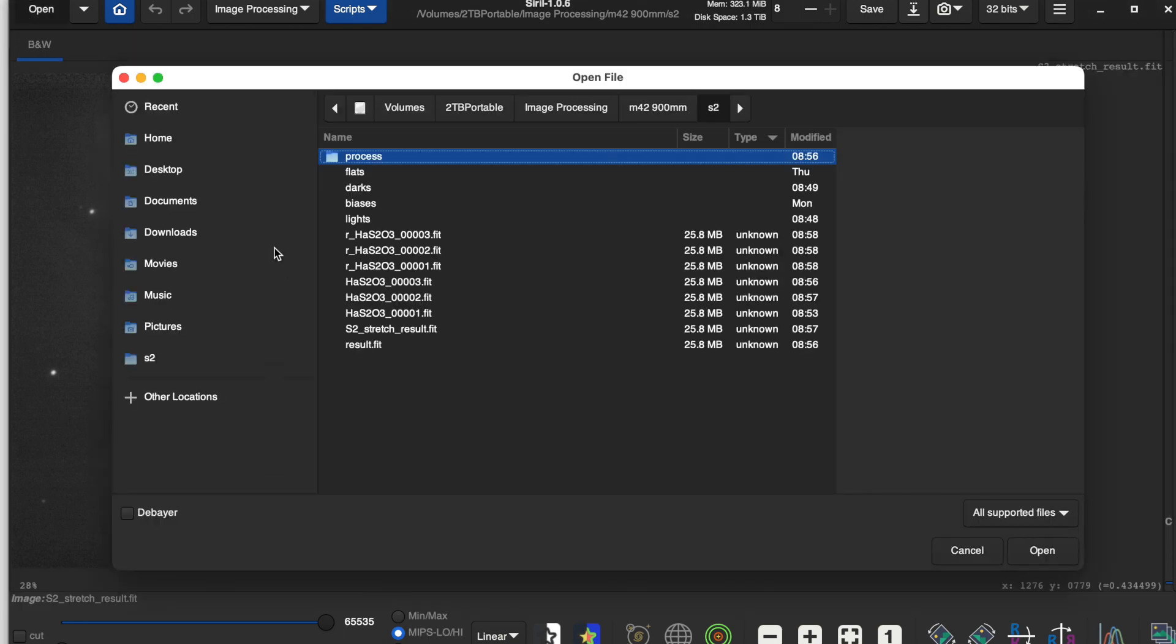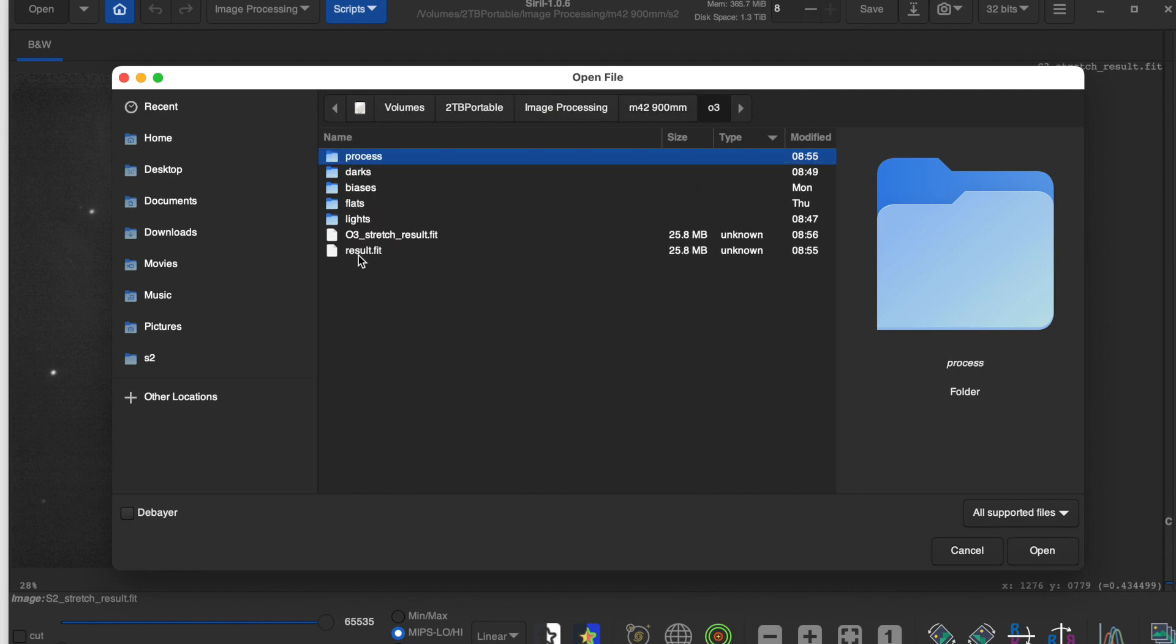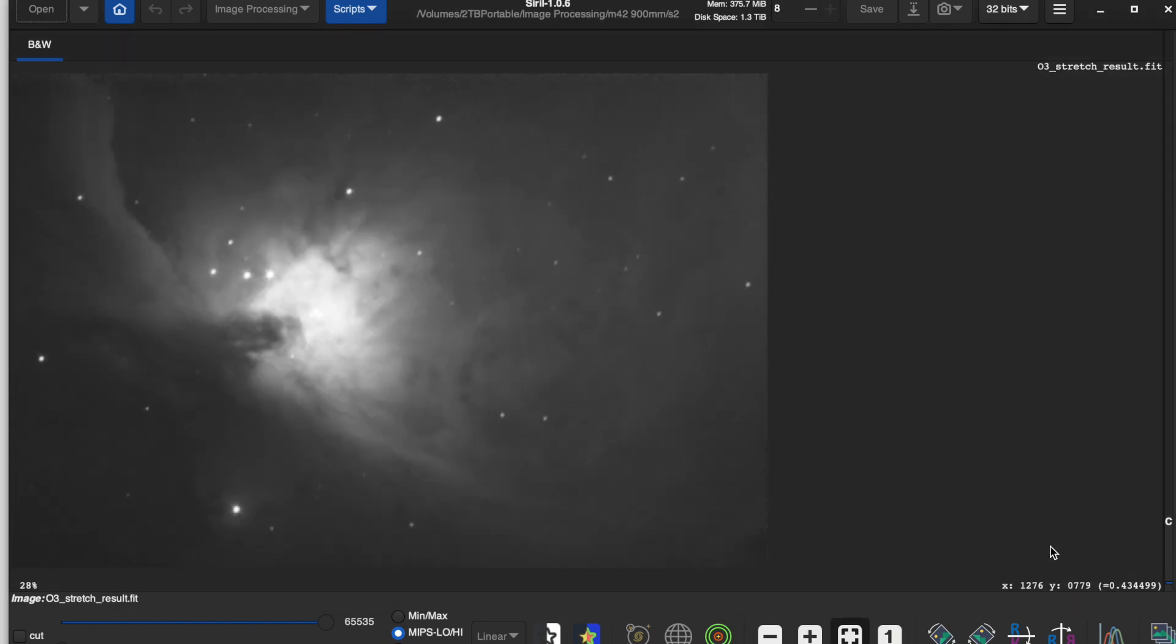Now let's take a look at the oxygen. Here's the original stretch. And again, pretty good detail. And also I took this in the Bortle 8 to 9 skies. So it's pretty bright out here. I have a lot of light pollution. And the oxygen channel is hard to get in this city, at least for me.